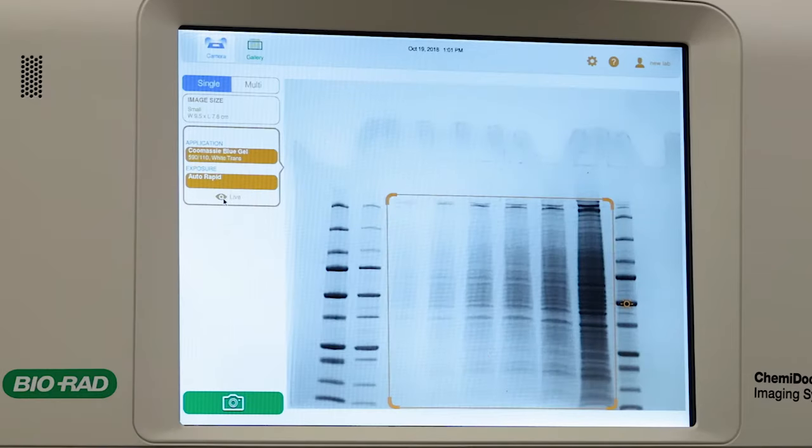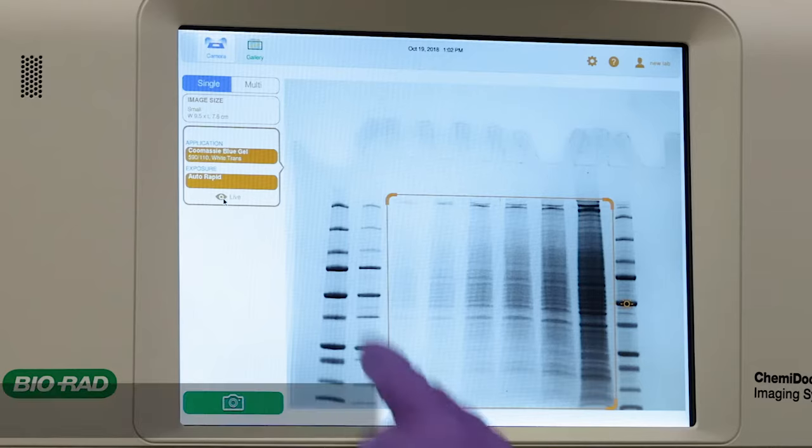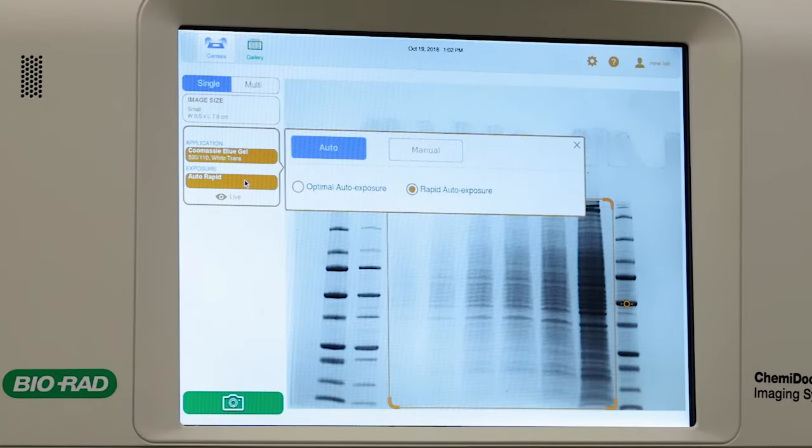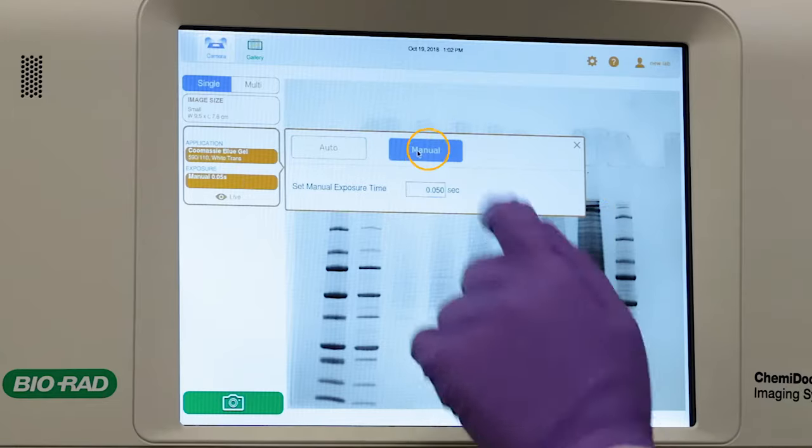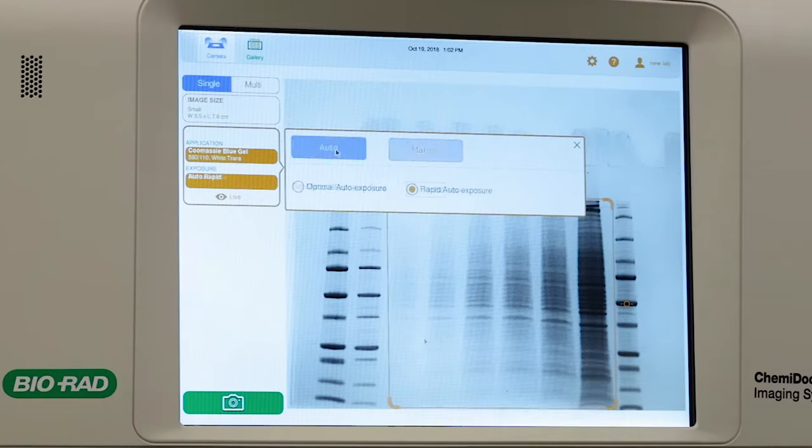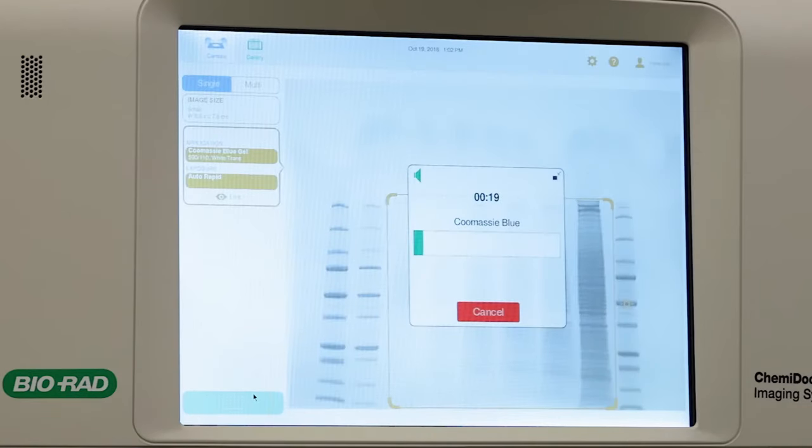You can take a preview of your image and set your region of interest. This can be used for excluding very bright areas that you won't want to quantify, such as your marker. Choose between entering your exposure time or enabling automatic detection of your bands. Tap the camera button and capture the image.